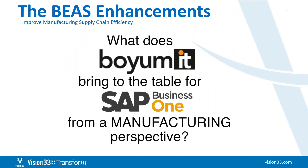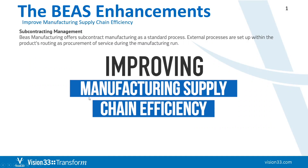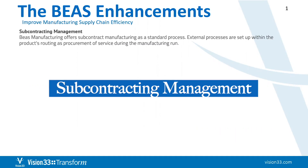I've tried to group these items under some subtopics. The first subtopic is really about improving manufacturing supply chain efficiency. There are two or three things added that we really don't have in SAP Business One in an adequate sense to service the requirements that many of our manufacturing customers might have. Subcontracting management is one of those things. Bayes Manufacturing offers subcontracting as a standard process — external processes, like if you send something out to paint it or for other sorts of assembly, are set up within the product routing as procurement of service during the manufacturing run.